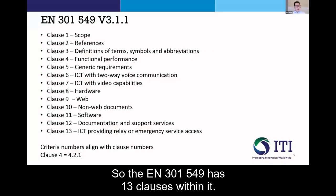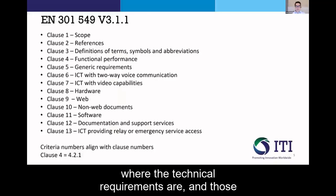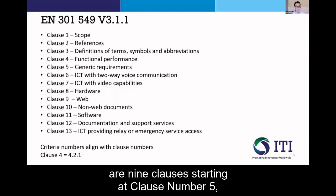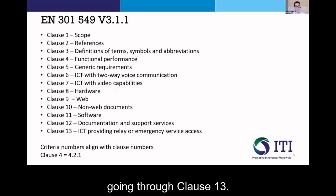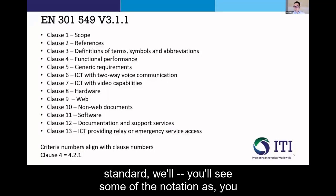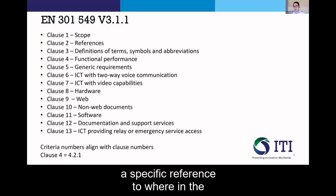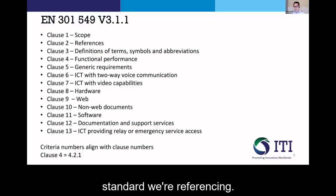The EN 301 549 has 13 clauses within it. The clauses we'll specifically focus on — where the technical requirements are — are nine clauses starting at clause number five through clause 13. As we refer to different clauses and parts of the standard, you'll see notation like 4.2.1 or some decimal value, which is a specific reference to where in the standard we're referencing.